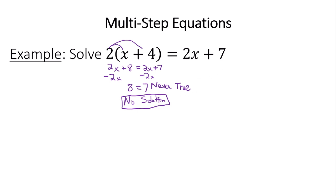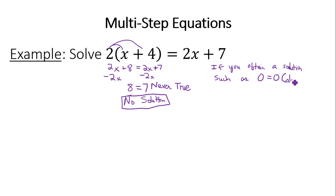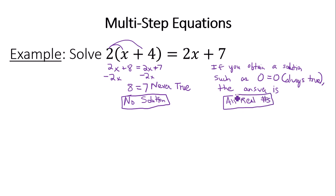On another note: if you obtain a result such as 0 equals 0 — something that is always true, like 7 equals 7 or any number equal to itself — any time you get a solution like this, the answer is all real numbers. These are two very special cases for equations.